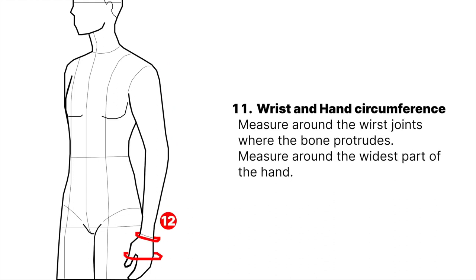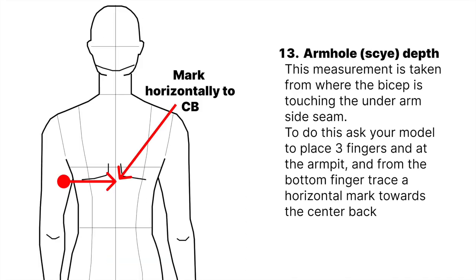Wrist and hand circumference: measure around the wrist joints where the bone protrudes, then measure around the widest part of the hand. Armhole side depth: this measurement is taken from where the bicep is touching the underarm side seam. Ask your model to place three fingers at the armpit and from the bottom finger trace a horizontal mark towards the center back.